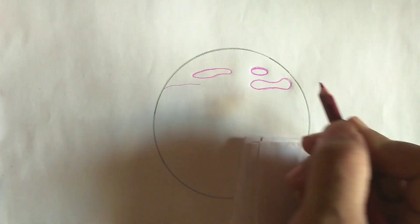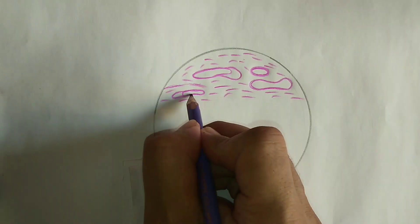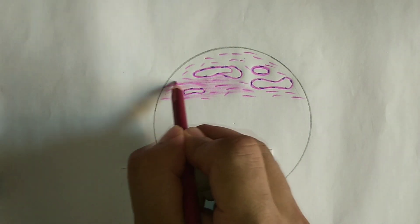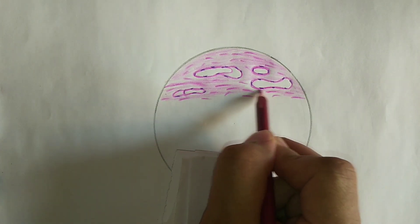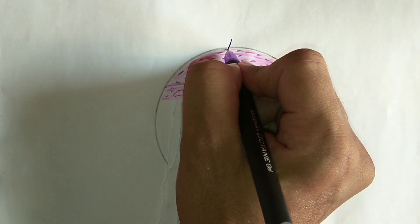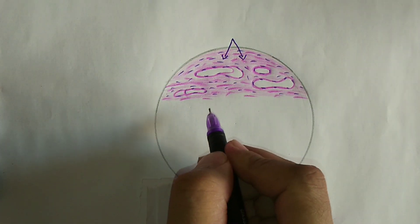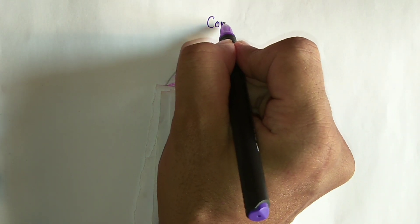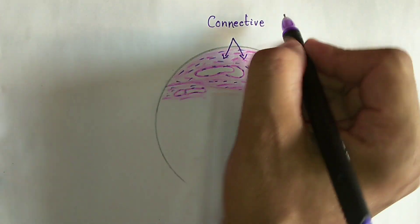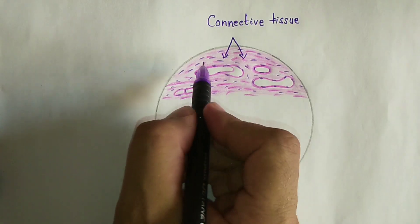Here we are making a structure of afferent lymphatic vessels with the valves, venules, and arterioles in the connective tissues. This is the connective tissue where the arterioles and venules are present — a layer of connective tissue with venules and arterioles surrounded by the lymph node capsule.